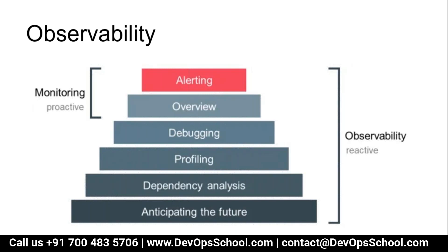Looking at more differences: anticipating the future, dependency analysis, profiling, debugging, overview, and alerting — these are the things we do. Alerting and overview are part of monitoring, which is proactive. But in observability you also anticipate the future — you are predicting failures. It's not just alerting when failure has happened; you are anticipating it. You also do dependency analysis, profiling, debugging, and all that.